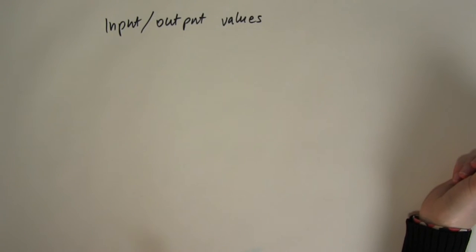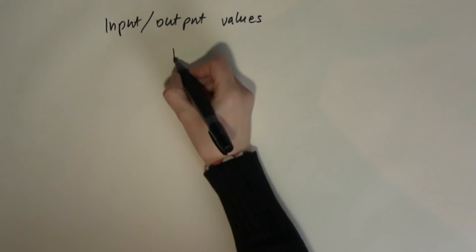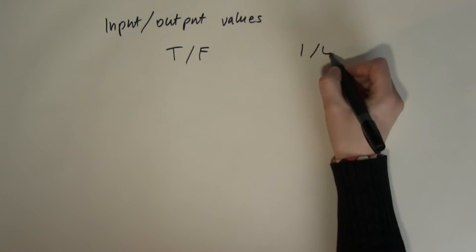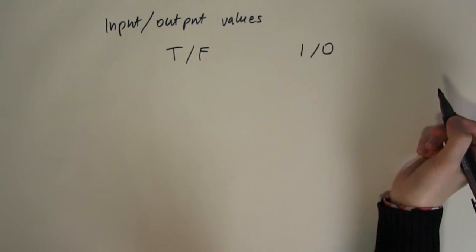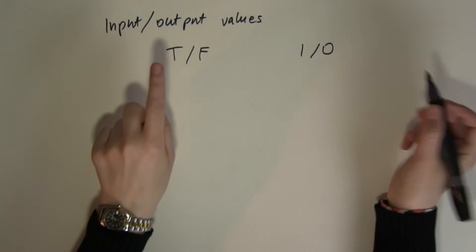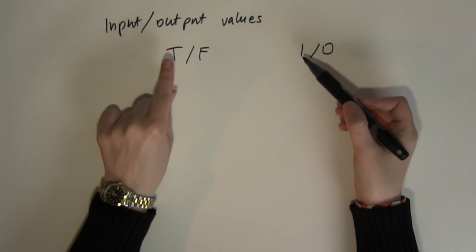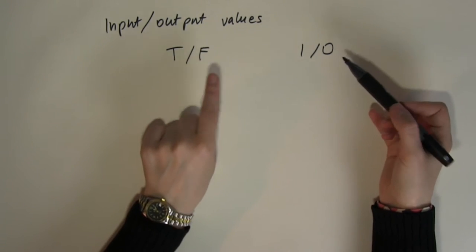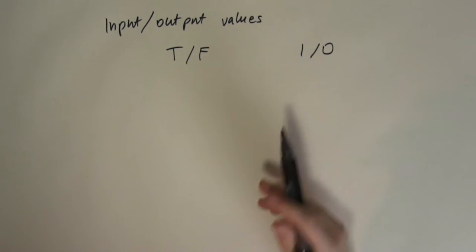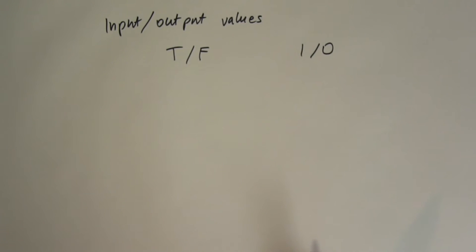There are two common ways to record input and output values: the true/false setup and the one/zero setup. This comes from the fact that logic circuits can be turned on or off. True and one correspond to the on position, and false and zero correspond to the off position. So let's look at what the basic boolean operations are.